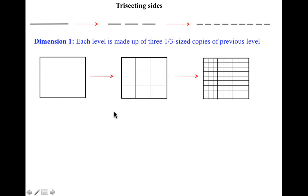We can trisect the square. And for each level, we get nine one-ninth size copies of the previous level.